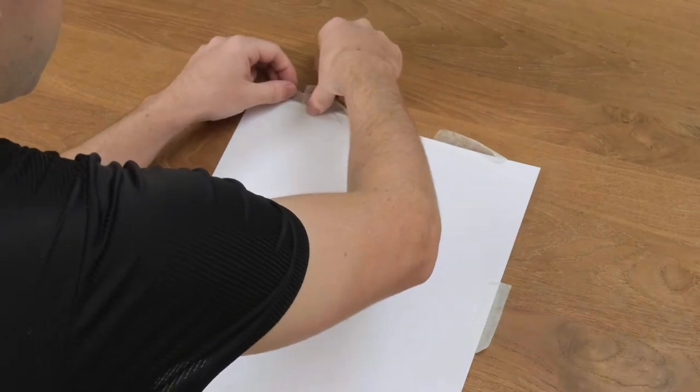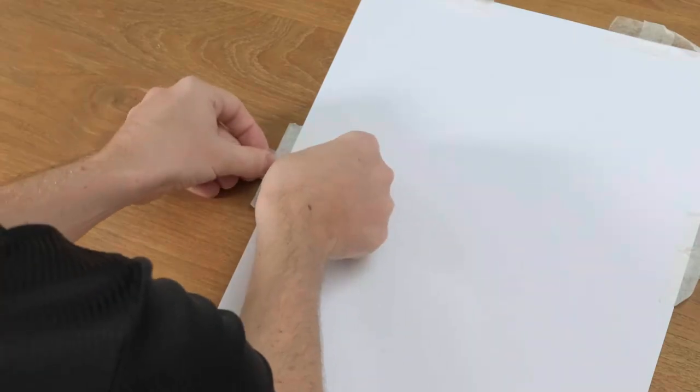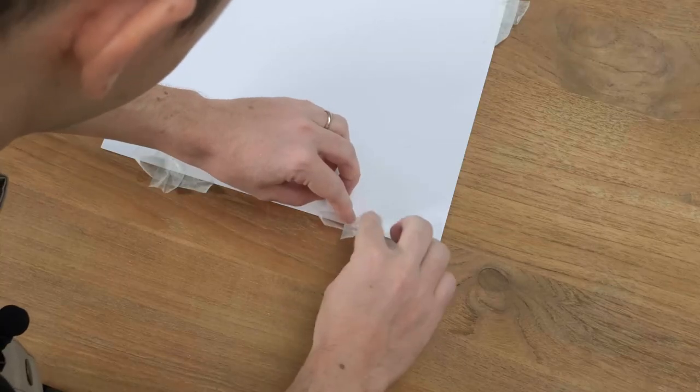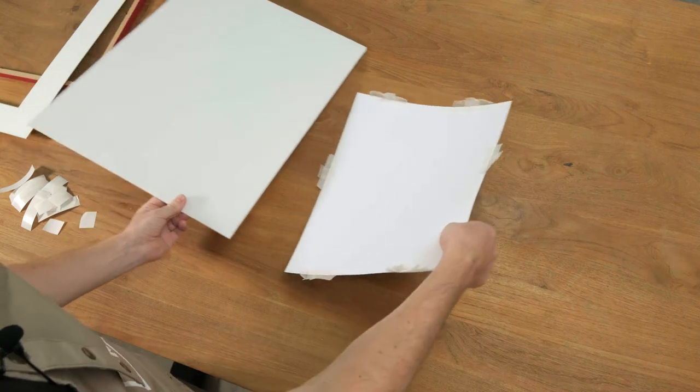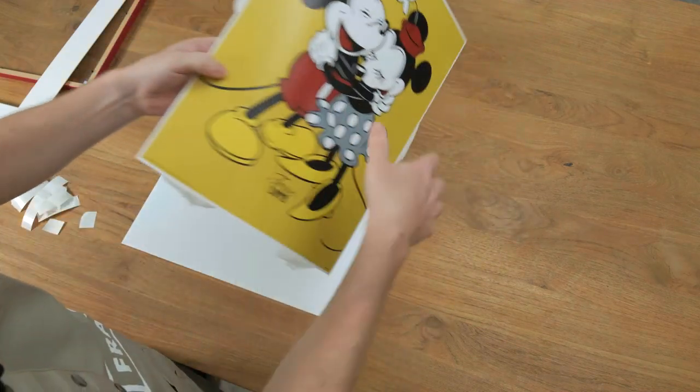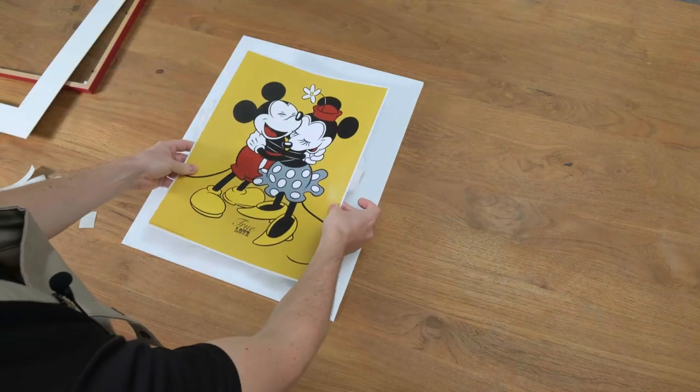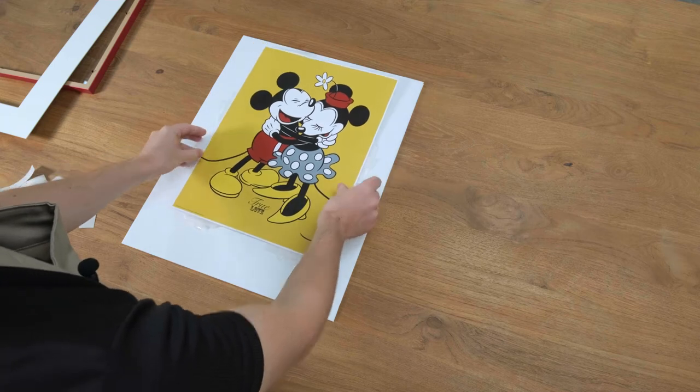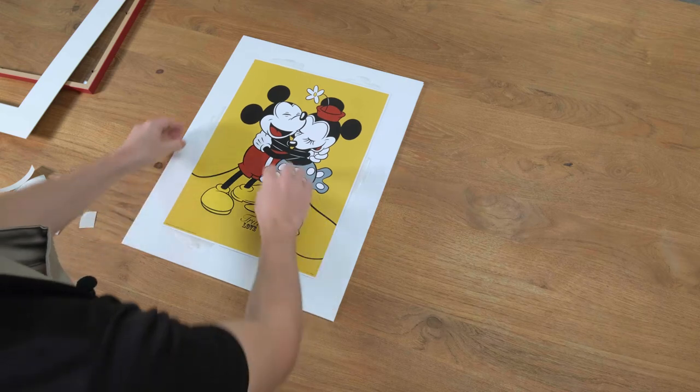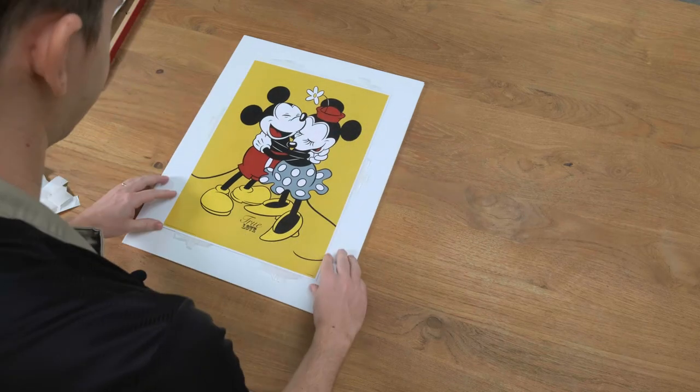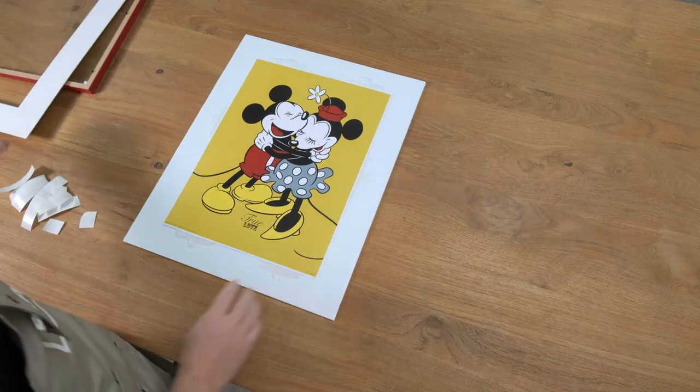Once we've got all of the tips stuck on, we're going to bring the PVC backing board back in and turn over the item and place it back down. Just need to make sure the tape doesn't stick yet to the PVC. We get it roughly into the position that we want it.